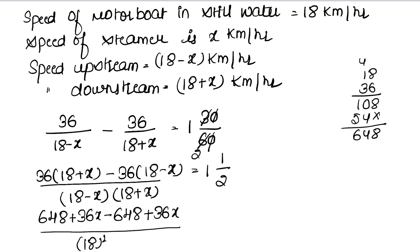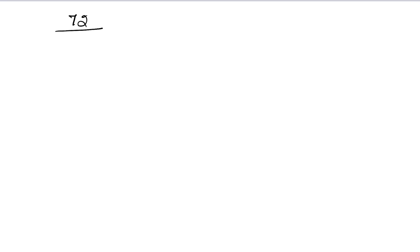Applying the formula: a² minus b² where a = 18 and b = x. 18 squared equals 324. So the equation simplifies to 72x divided by (324 minus x²) equals 3/2.